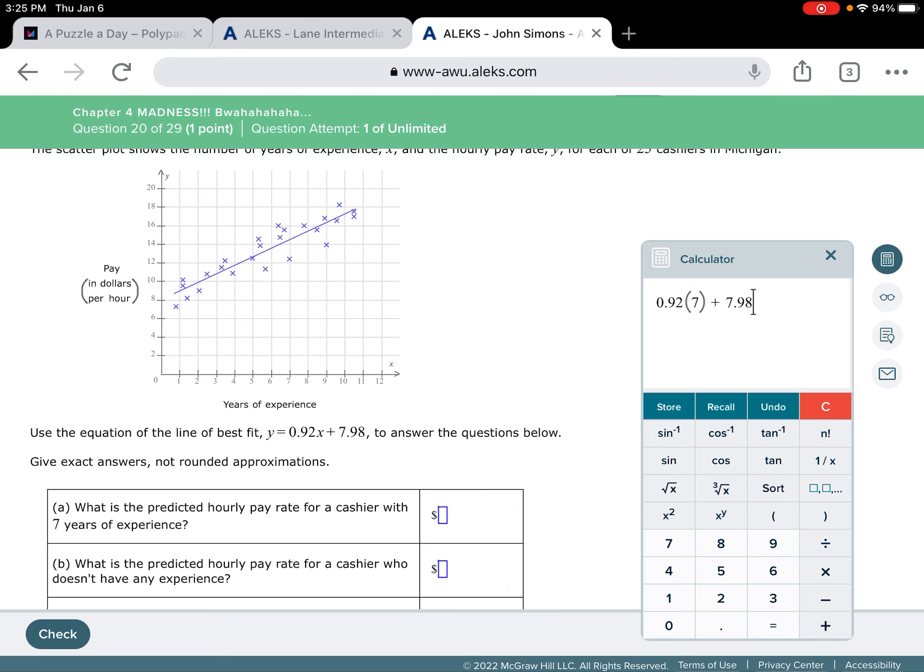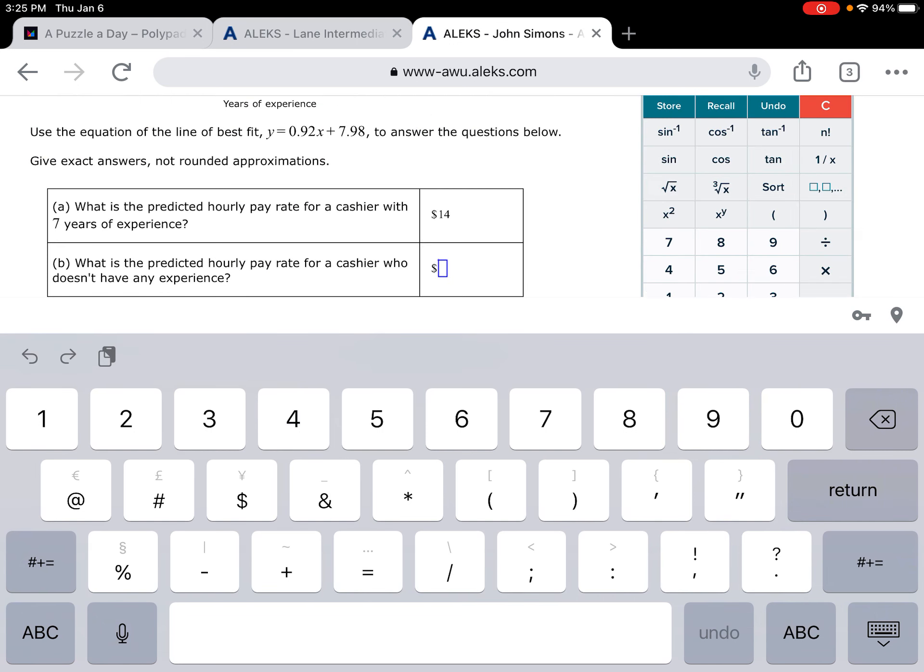And if we do this right, we should get somewhere around 1450, 1475, something like that. We get 14.42. And if you look at the graph and where the blue line meets with 7, that's pretty close to where it is. So let's put that in, 14.42, $14.42. Nice.